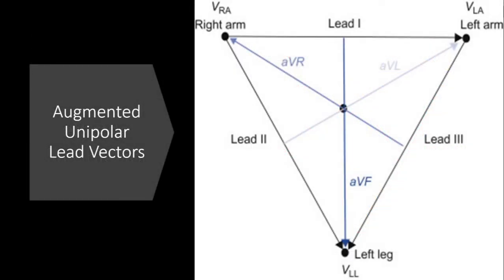Now that we know about the bipolar vectors, let's look at the augmented vectors, which is your AVR (augmented vector right), AVL (augmented vector left), and AVF (augmented vector foot). So to find augmented vectors, we need to see that they are located on the corners of our triangle that we made up with our bipolar leads. AVR is going to be in the right corner, AVL is going to be on the left side of the triangle, and AVF is going to be in the bottom or closest to the foot.